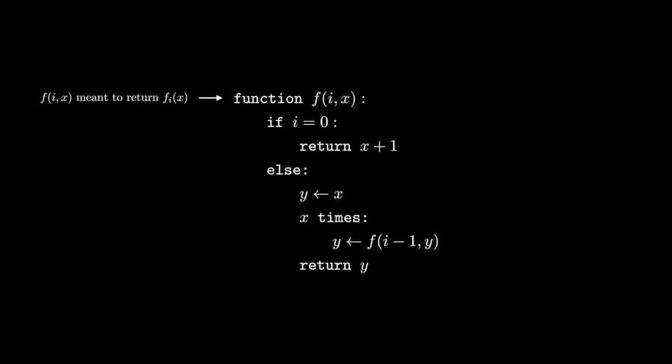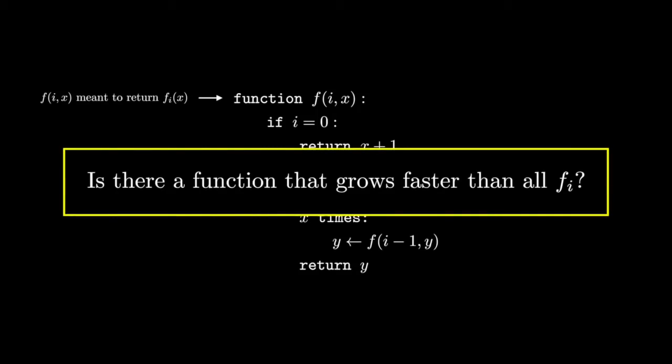With this code, we can easily come up with really large numbers. But is there a function that we can easily code that grows faster than all the functions in this fast-growing hierarchy? At first sight, this seems impossible. There are infinitely many functions in our fast-growing hierarchy. If you give me any function, can't I just keep looking through the infinitely many functions that I have and eventually find one that grows faster than the function you gave me?